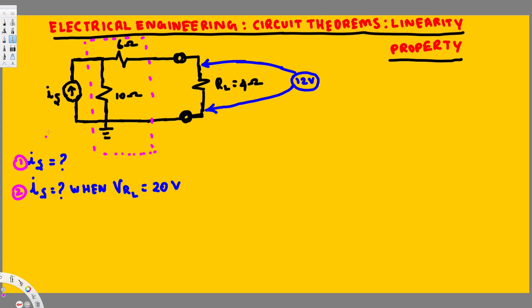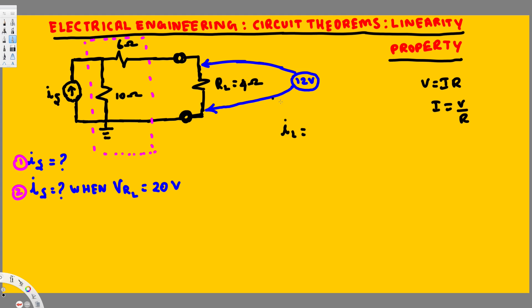The first question is asking to find the current source, so let's see which current is easy to find. We know that V = IR, therefore I = V/R. We need a place where we have voltage and resistance. In the load resistance we have both, so we can find the current there. Let's call this I_L. I_L equals voltage over resistance: 12 divided by 4, which is 3 amperes.